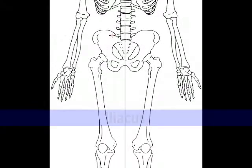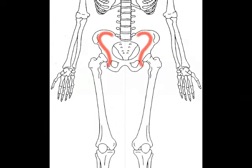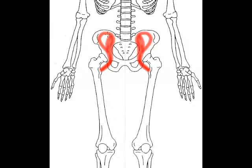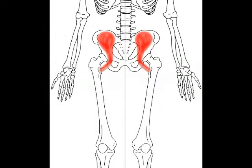Our next muscle is the iliacus. The iliacus is a large fan-shaped muscle that brings the leg forward when walking or running. Sprinters and football players often learn about this muscle the hard way, because the iliacus is located in the inguinal or groin region, it's often one of the muscles involved in a pulled groin injury.